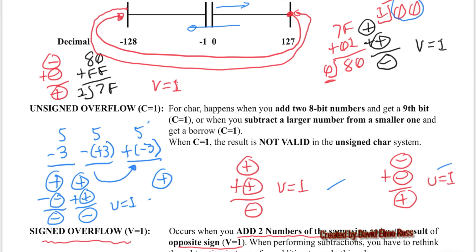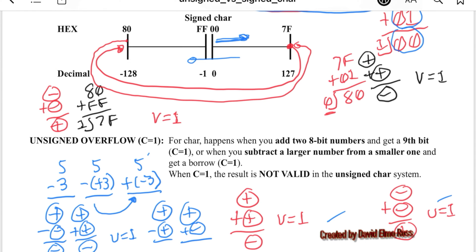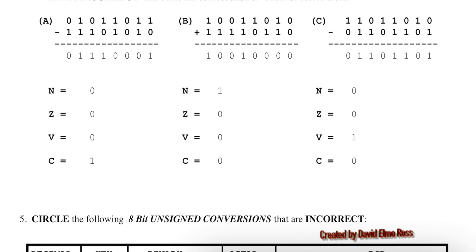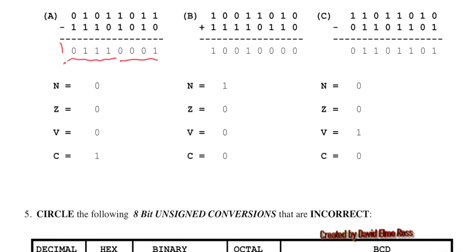If we have a positive subtracting a positive, that's the same as positive plus negative. Adding numbers of opposite sign means there's no way to get a signed overflow — V equals 0. Now let's apply what we've learned about signed overflow to questions 3 and 4 on lab 1. Starting with 4a, the answer is 71 plus a borrow, so n equals 0, C equals 1, and Z equals 0.